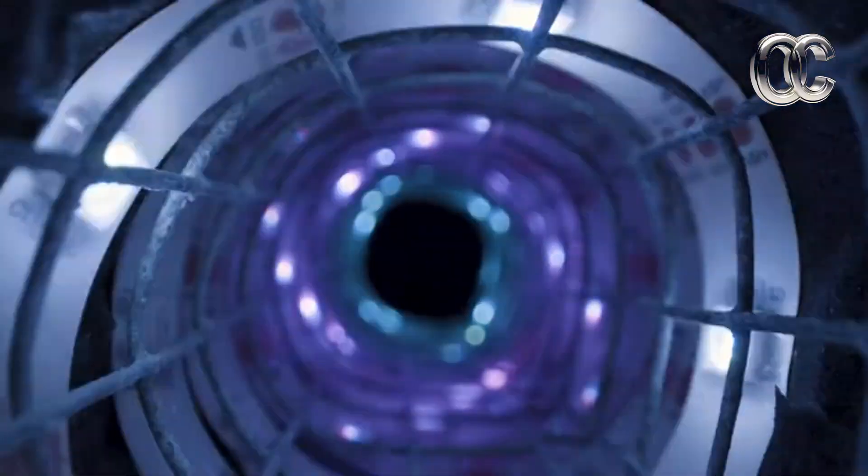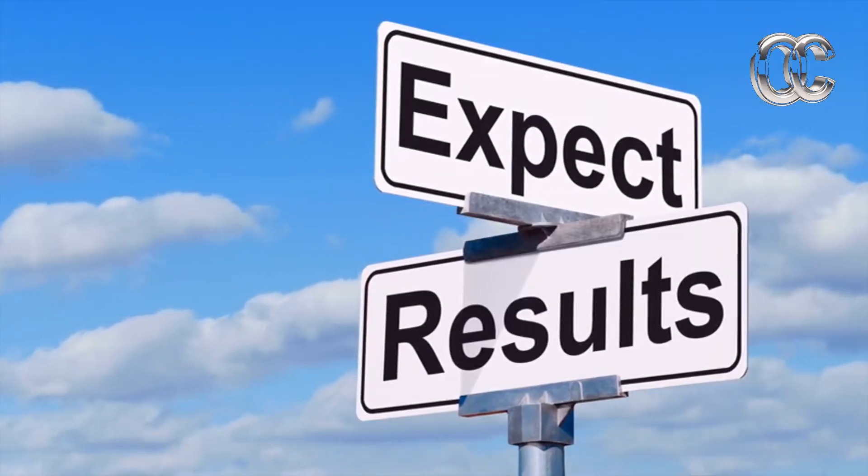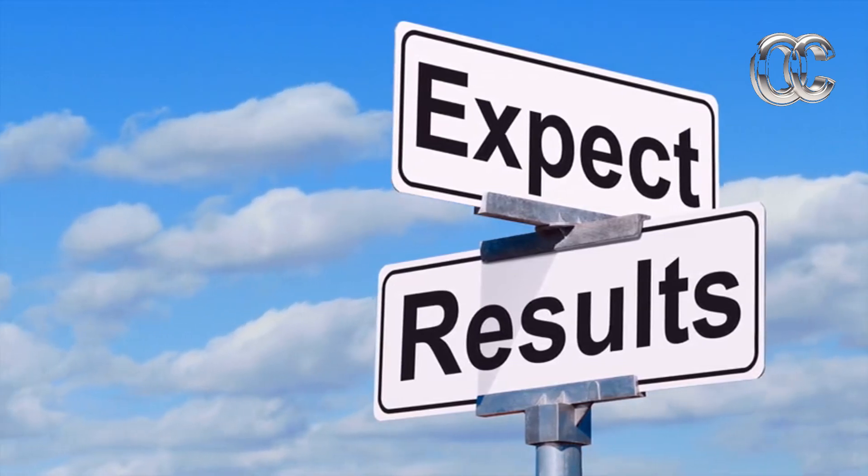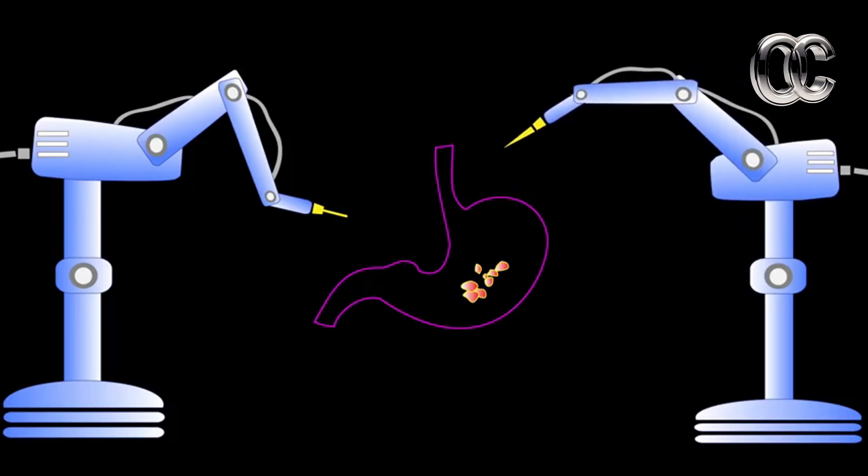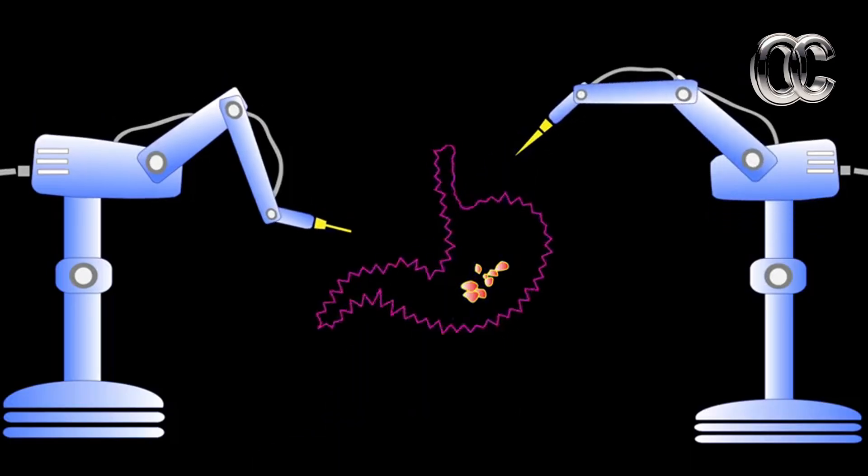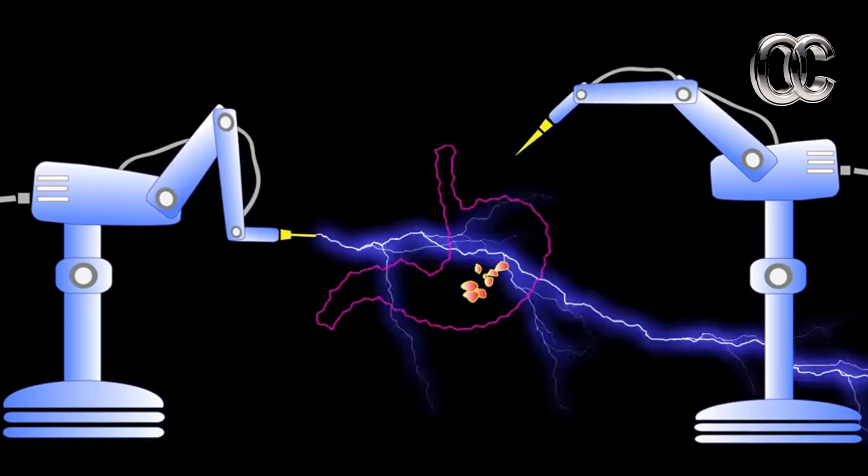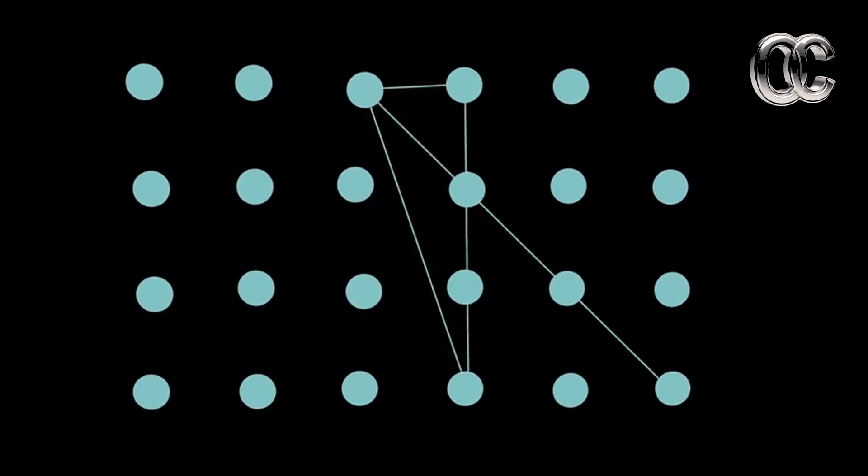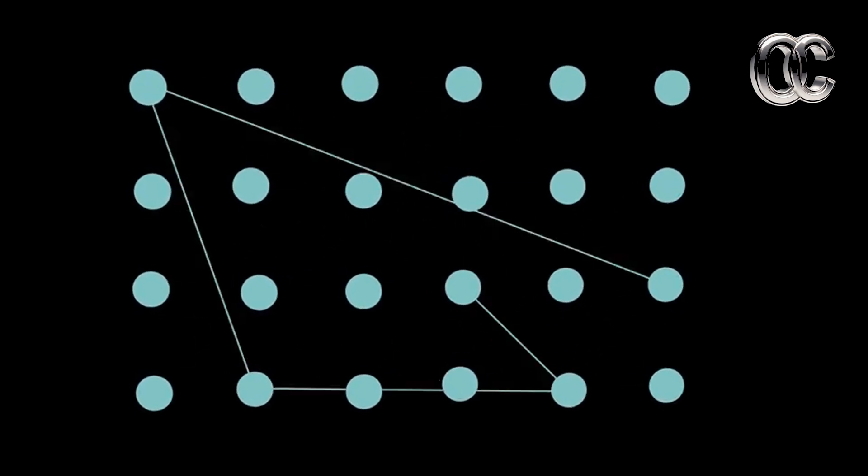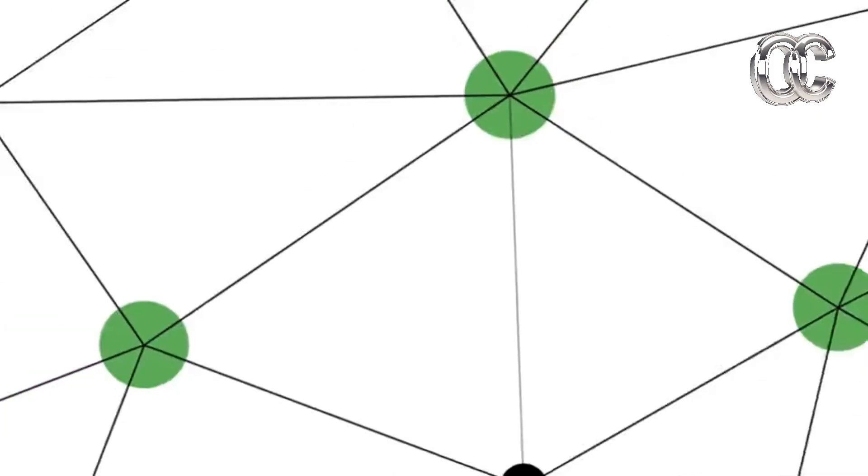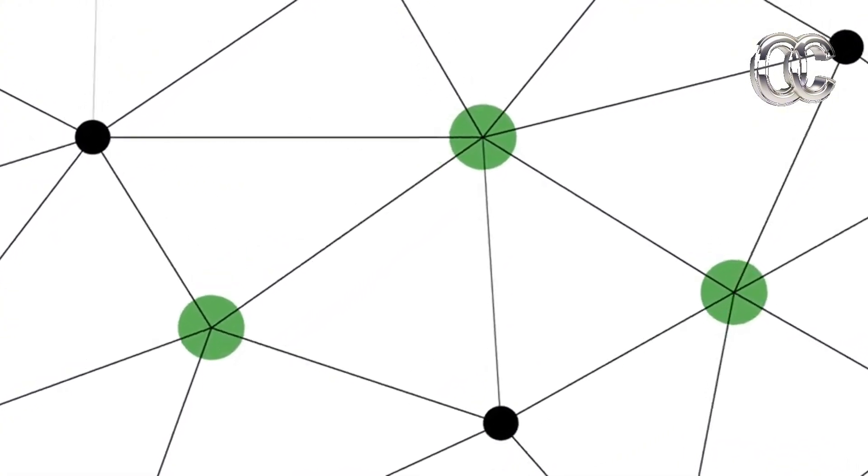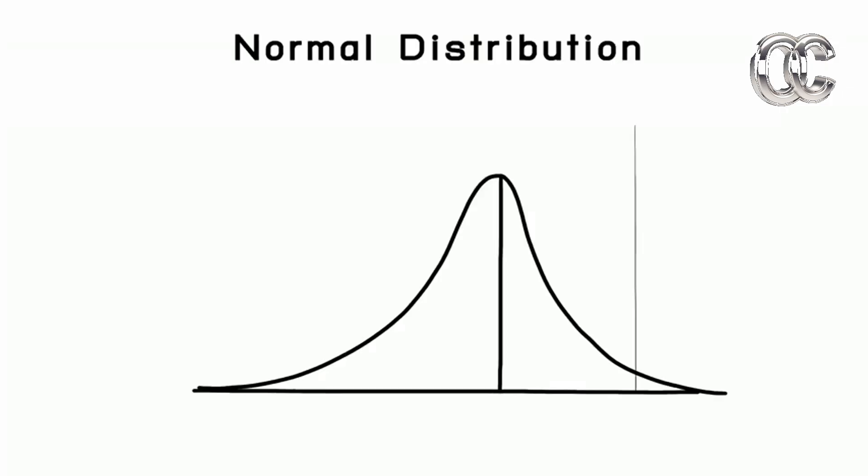Tunneling is deeply tied to quantum superposition. A particle doesn't have a definite location until measured. It exists in a superposition of states, meaning it can be partially on both sides of a barrier until observed. This non-determinism is what allows for tunneling in the first place. It's not that the particle is breaking rules, it's simply playing by the quantum rulebook.